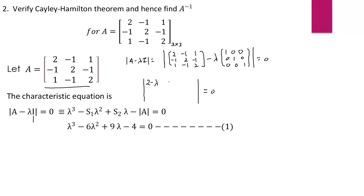Instead of expanding the determinant directly, we use the standard formula: lambda³ minus S₁·lambda² plus S₂·lambda minus det(A) equal to 0. Here S₁ is the trace of the matrix — the sum of diagonal elements — that is 2 plus 2 plus 2 equals 6. So S₁ is 6.